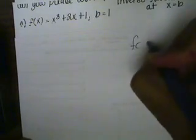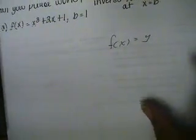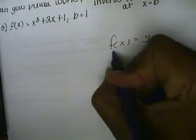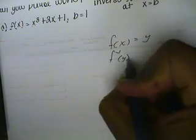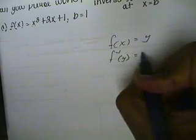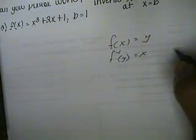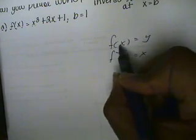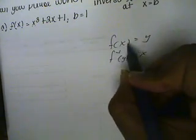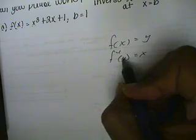A function, if you use x as the input, y is typically used as the output. For an inverse function, it would have that y is the input and x would be the output. So in the original function, x is the input. In the inverse function, y is the input.